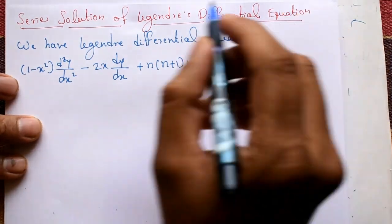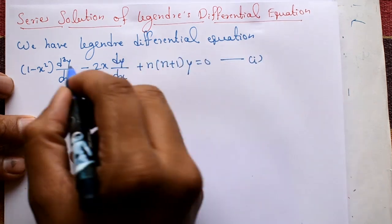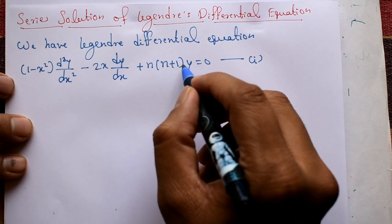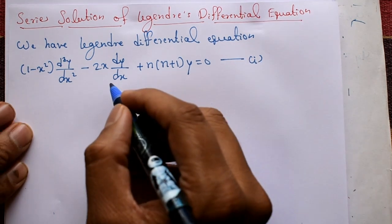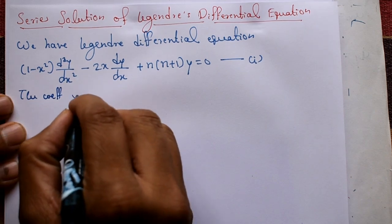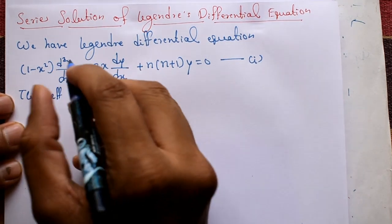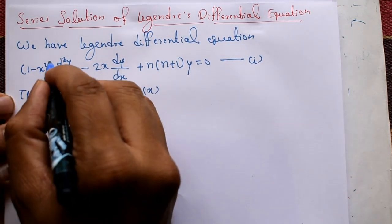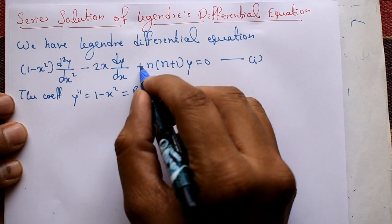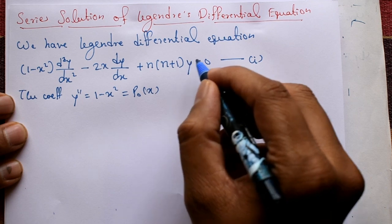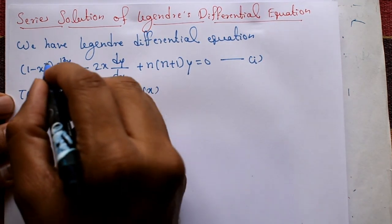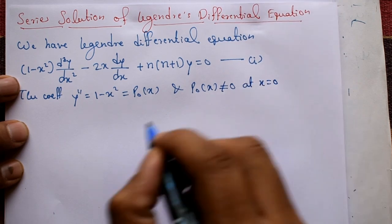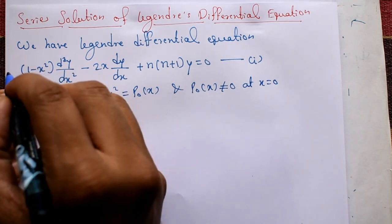We begin the series solution of Legendre's differential equation. The equation is: (1 - x²)(d²y/dx²) - 2x(dy/dx) + n(n+1)y = 0, which is equation number 1. The coefficient of y'' is P₀(x) = 1 - x², and we can write the equation as P₀(x)y'' + P₁(x)y' + P₂(x)y = 0. Note that P₀(x) is not equal to 0 when x = 0, since substituting x = 0 gives P₀(0) = 1.